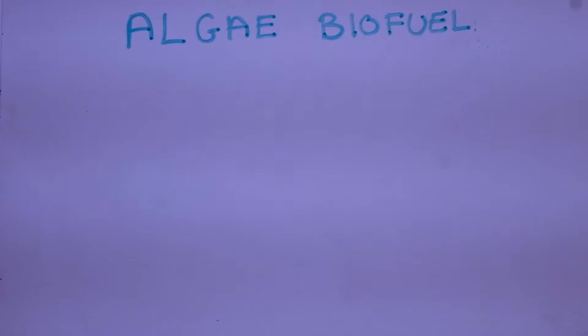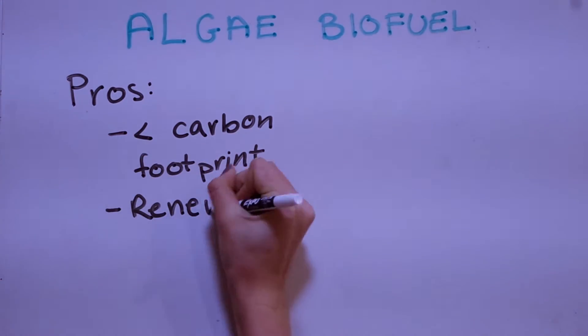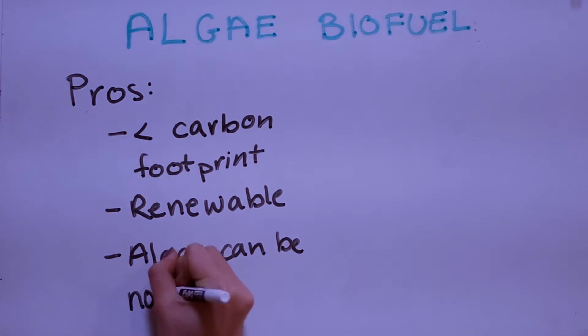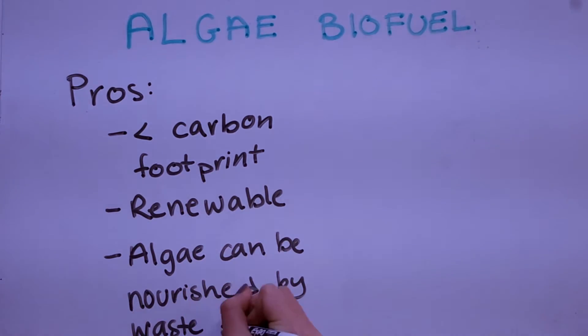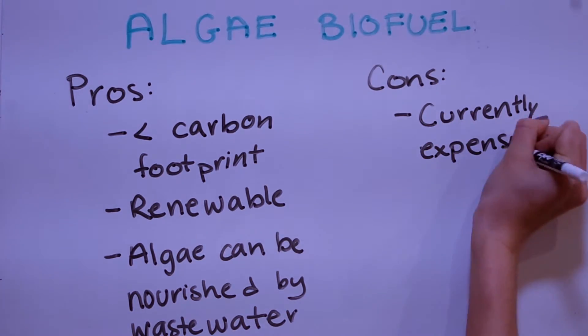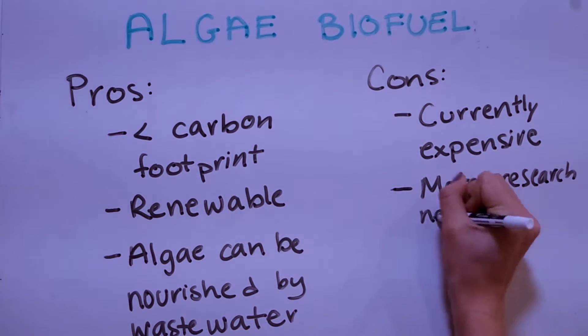In comparison to fossil fuels, algae biofuel has a smaller carbon footprint. It's also a renewable energy source. Additionally, algae can be grown with wastewater, which reduces the amount of fresh water needed to produce biofuel. However, at $7.50 per gallon, it is more expensive than oil and therefore needs more time and research to be cheaper.